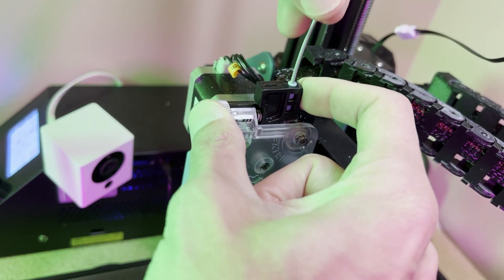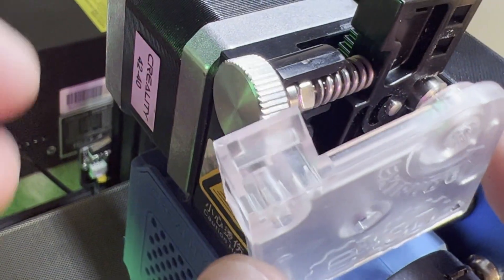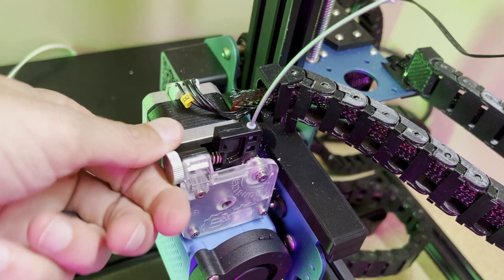Unfortunately, I was unable to pull the filament out, so we're going to have to open up the housing to take a closer look at what's going on. First, you're going to want to loosen up the tension dial.